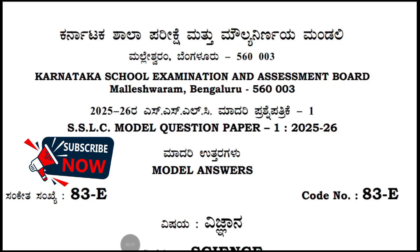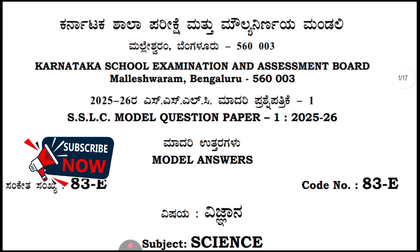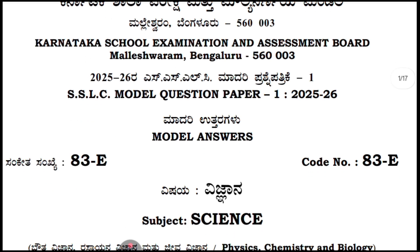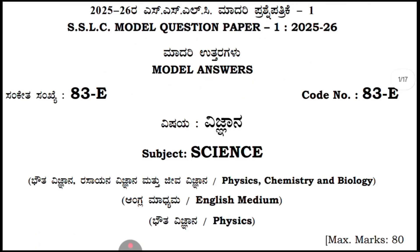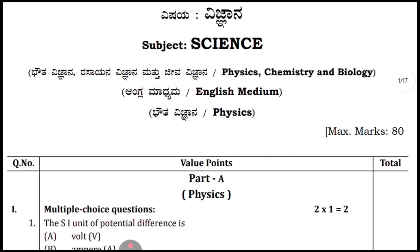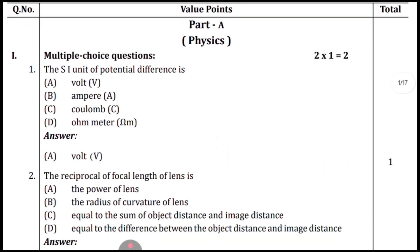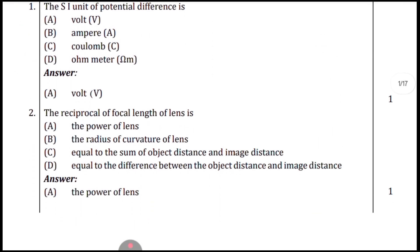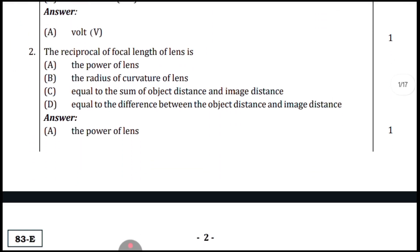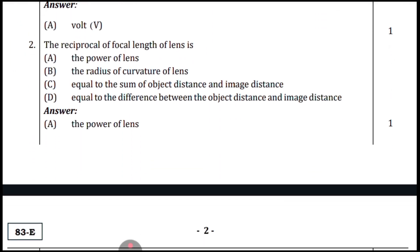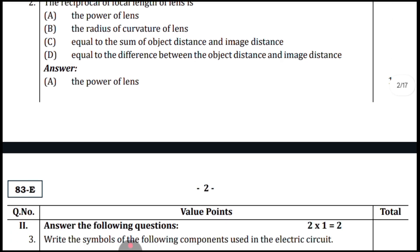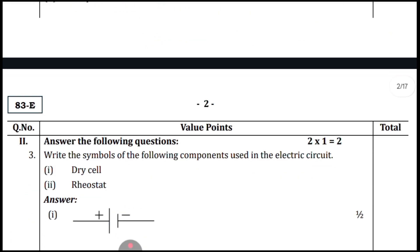Welcome to the first video of the model question paper for Science 2025-26. Starting with the physics section: the unit of potential difference is Volt (Old). Coming to the second question, the reciprocal of focal length of a lens is the power of the lens.